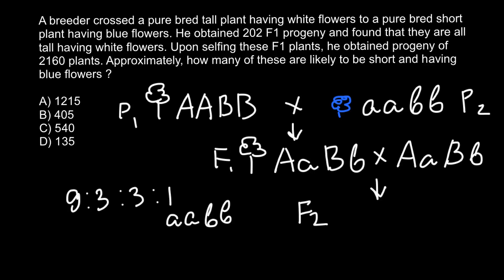Our problem asks how many plants in the progeny would be short and having blue flowers. That corresponds to the homozygous recessive genotype. As you can see, this is a ratio — 9 plus 3 plus 3 plus 1 equals 16 — and 1 out of 16 plants would belong to this phenotype. The question asks how many plants out of 2160 we expect with this phenotype.